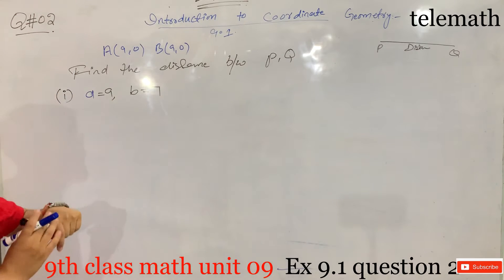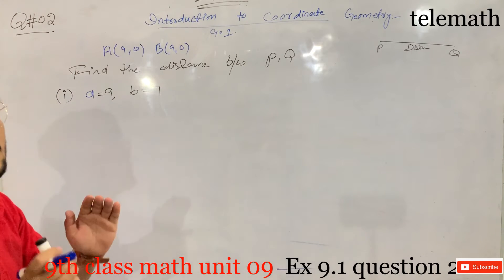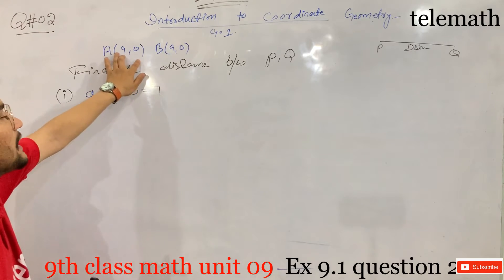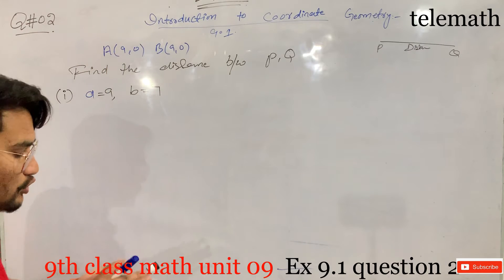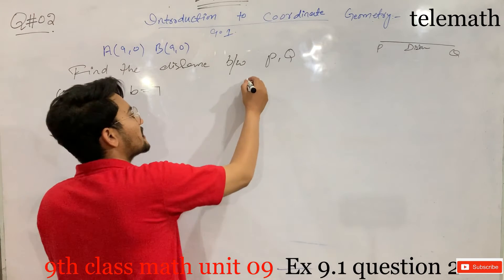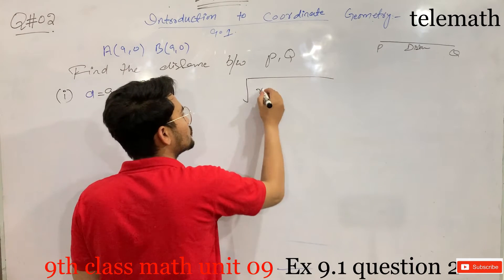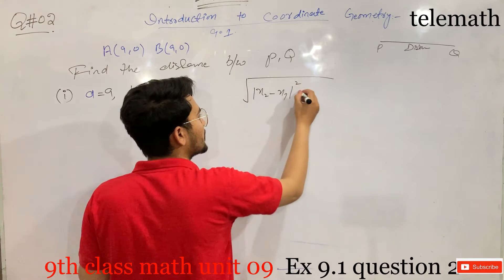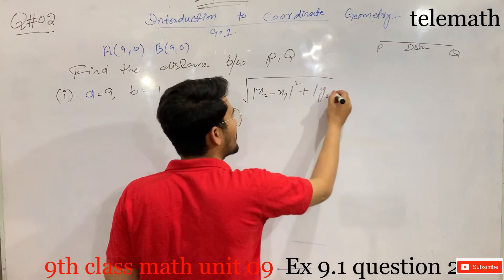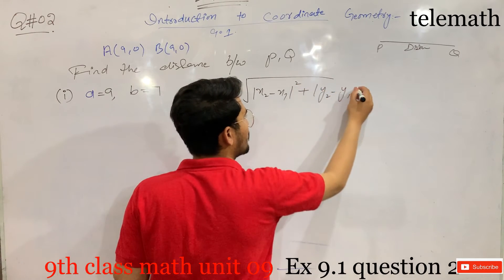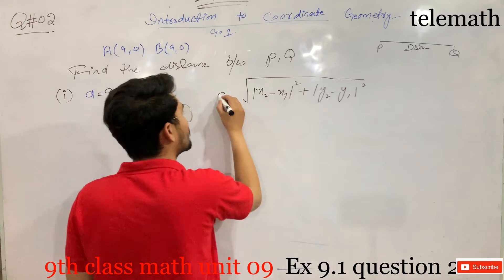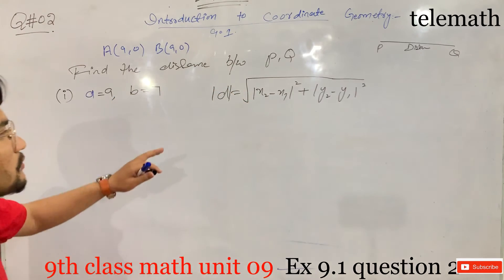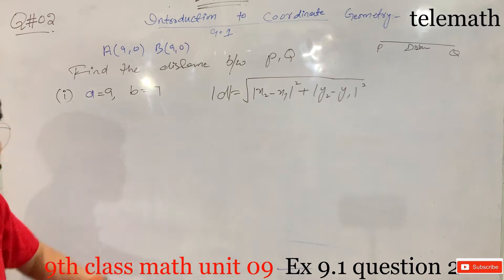In the previous question we were given two points and applied the distance formula. The distance formula is: square root of (x2 minus x1) whole square plus (y2 minus y1) whole square. This is the distance formula and the difference is that here we have two points.